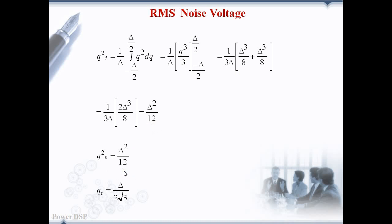The RMS noise voltage is derived by taking the square root so the RMS noise voltage is del by 2 root 3.